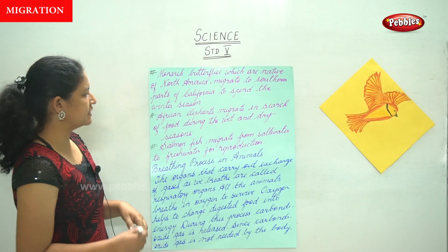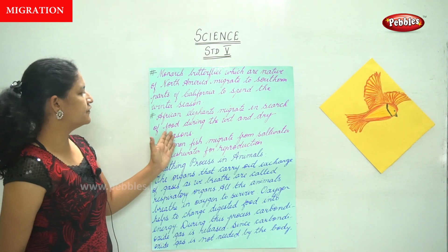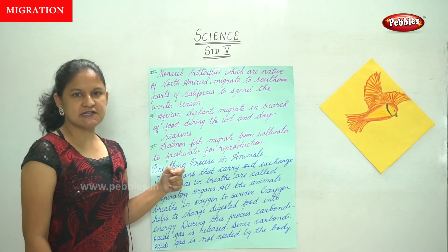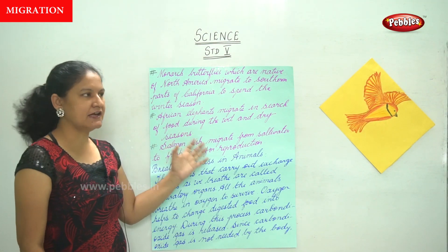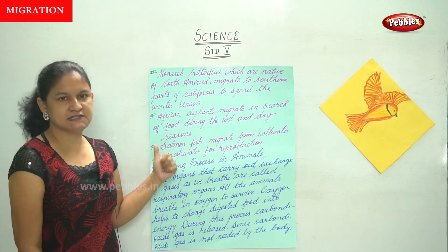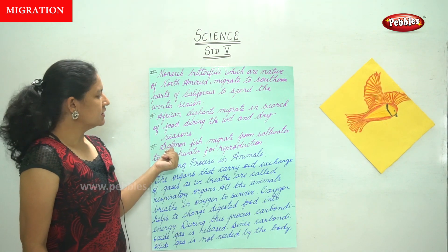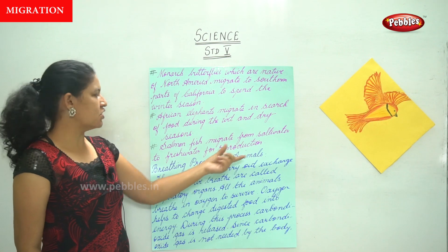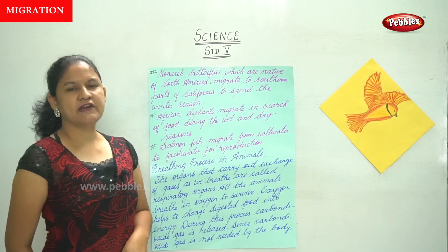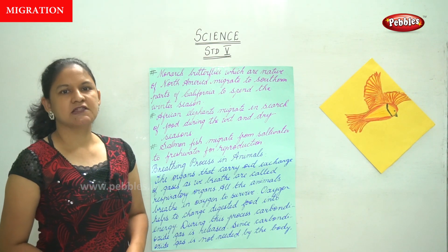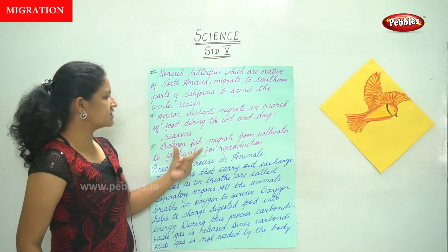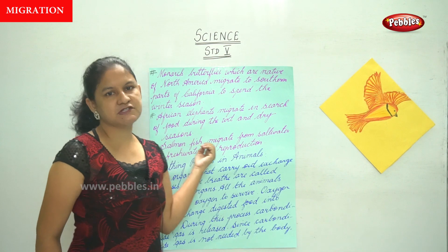African elephants migrate in search of food during the wet and dry seasons. The salmon fish migrate from salt water to fresh water for reproduction — when it is time to reproduce, the salmon fish migrates from salt water to fresh water.